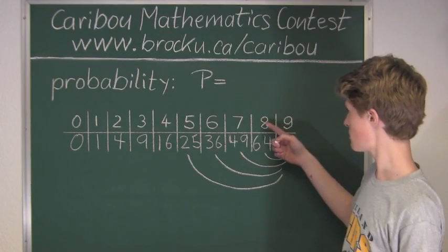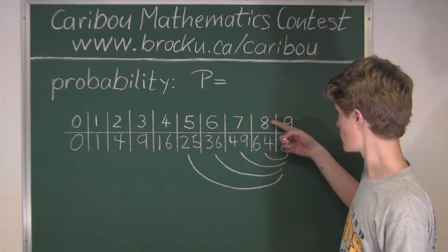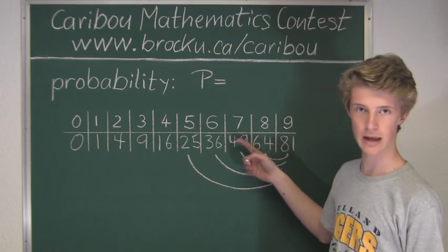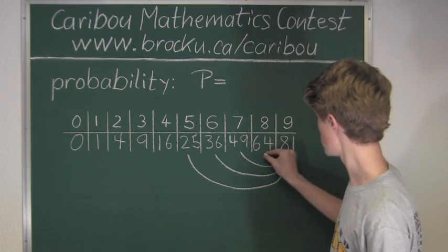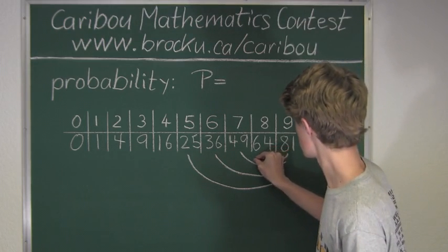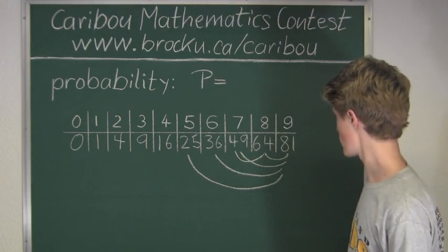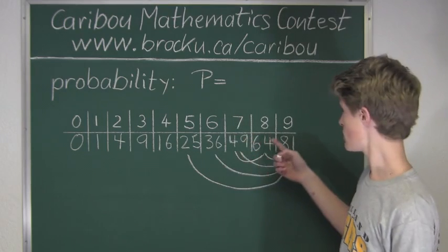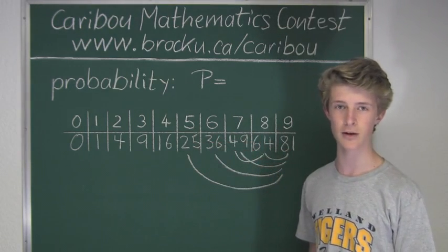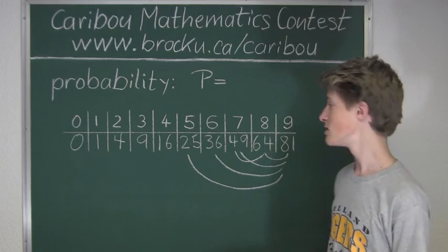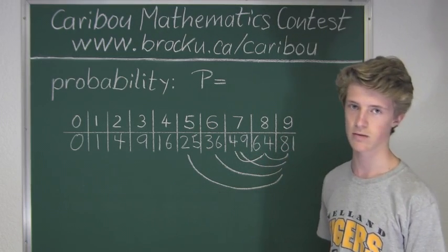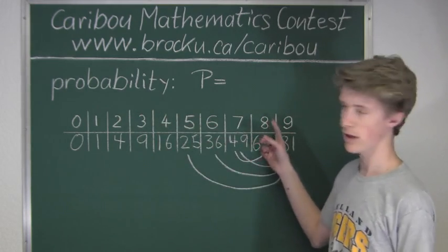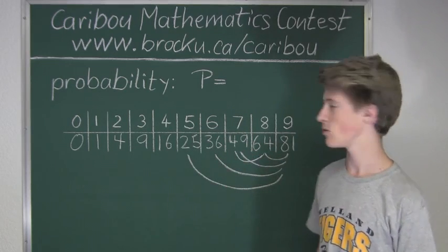So now we will take the next biggest number, which is 8, and we will take the next biggest number after that, which is 7. So we have 64 plus 49, so that is an event that we want to count. Now we will take 8 and 6, because 6 is the next biggest number after 7. So 64 plus 36 is exactly 100, so therefore it is not more than 100, so that is not an event that we will count.